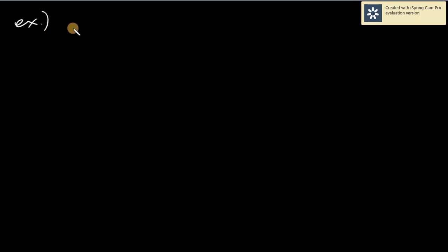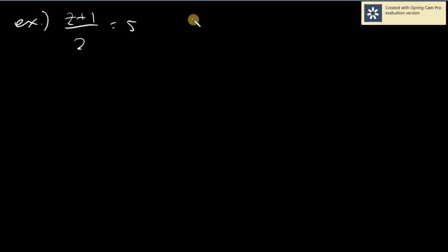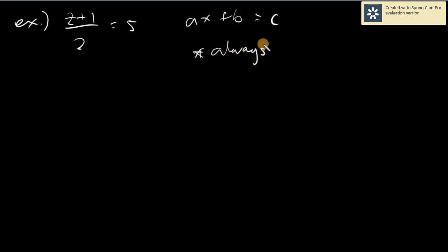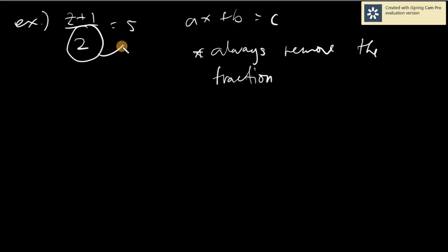Another example: Z plus 1 over 2 equals 5. In this case, you cannot clearly see what your A, B, and C are. What you simply need to do is eliminate the division — always remove the fraction. And how do we remove the fraction? Using the concept of transposition.